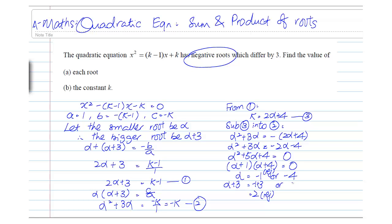Let's check the other value. When alpha is minus 4, the bigger root is alpha plus 3. Which will give us minus 1.